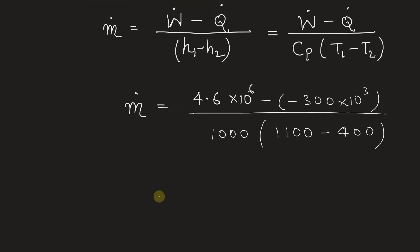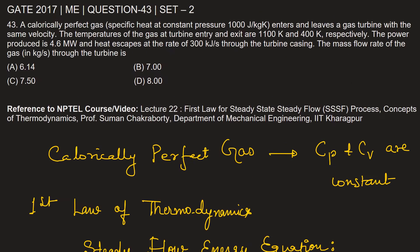From here, we get the mass flow rate is equal to seven kilogram per second. Let's go back to the problem. So the mass flow rate of the gas through the turbine is seven kilogram per second.